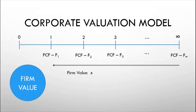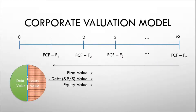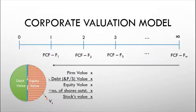Once we arrive at the firm value — which is basically the value of all of the company's assets — we are going to remove the portion funded by debt and preferred shares. Less debt and preferred share value, that would leave us with the value funded by equity, which we call the equity value. We then divide this among the number of common stocks outstanding to get the estimate of the stock's value.